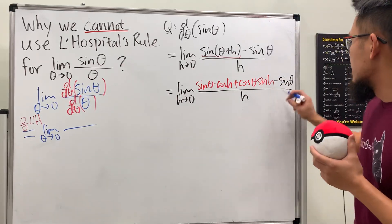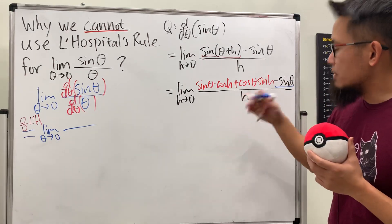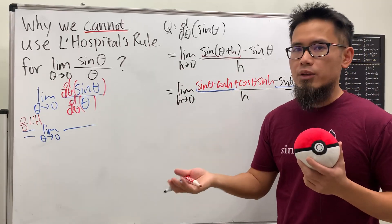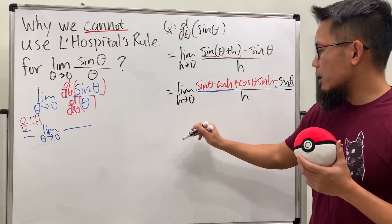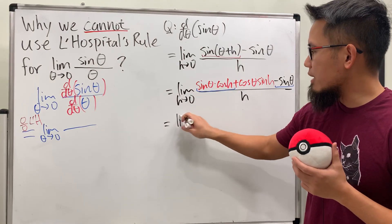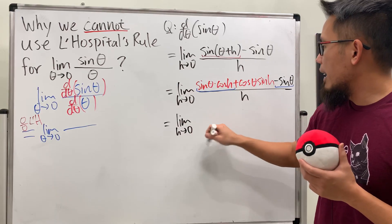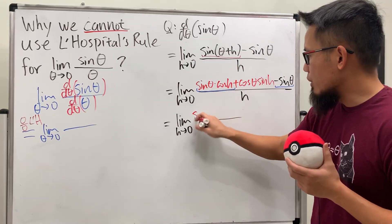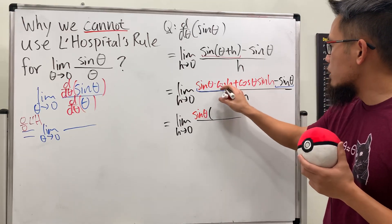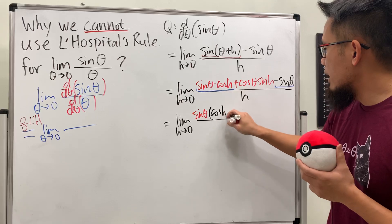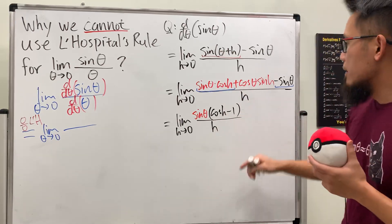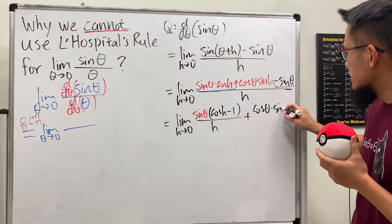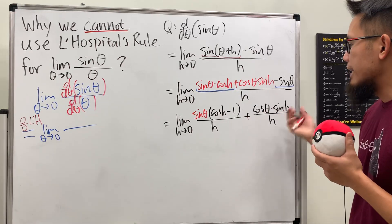Now, we have minus sine(θ) here and sine(θ) in the expansion, so we can group them together and factor out sine(θ). Writing the limit as h approaching zero, we get sine(θ)·(cos(h) − 1)/h plus cos(θ)·sin(h)/h.